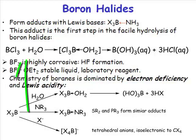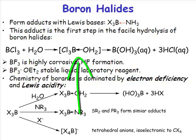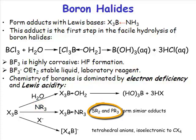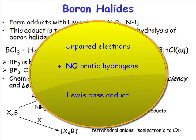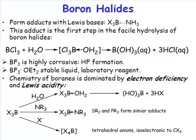For example, with boron trichloride and water, the first thing that happens is coordination of one of the lone pairs on oxygen to the vacant orbital on boron, forming an adduct. If you have a Lewis base that is an ether, an alkyl amine, a trialkyl phosphine, or dimethyl sulfide — anything that has lone pairs of electrons but does not have protic hydrogens — you will simply form a Lewis acid-Lewis base adduct.